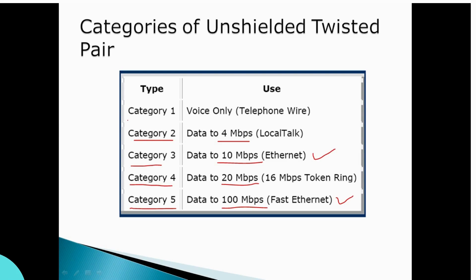Category 1 and Category 2 are the lower-speed cables. Category 5 supports 100 Mbps speed, and Category 6 supports 1000 Mbps (1 Gbps) speed.